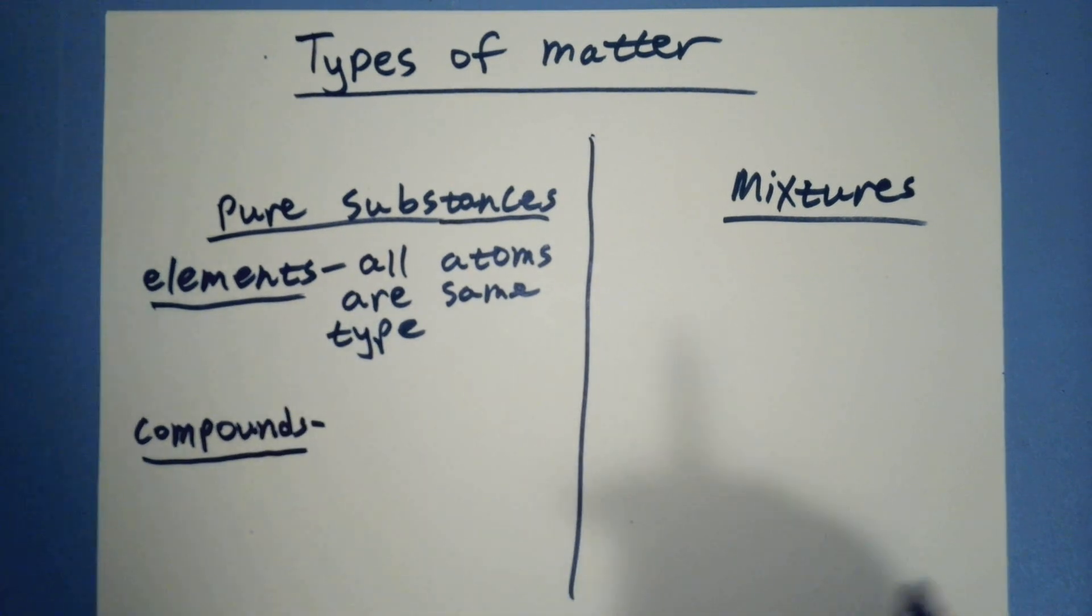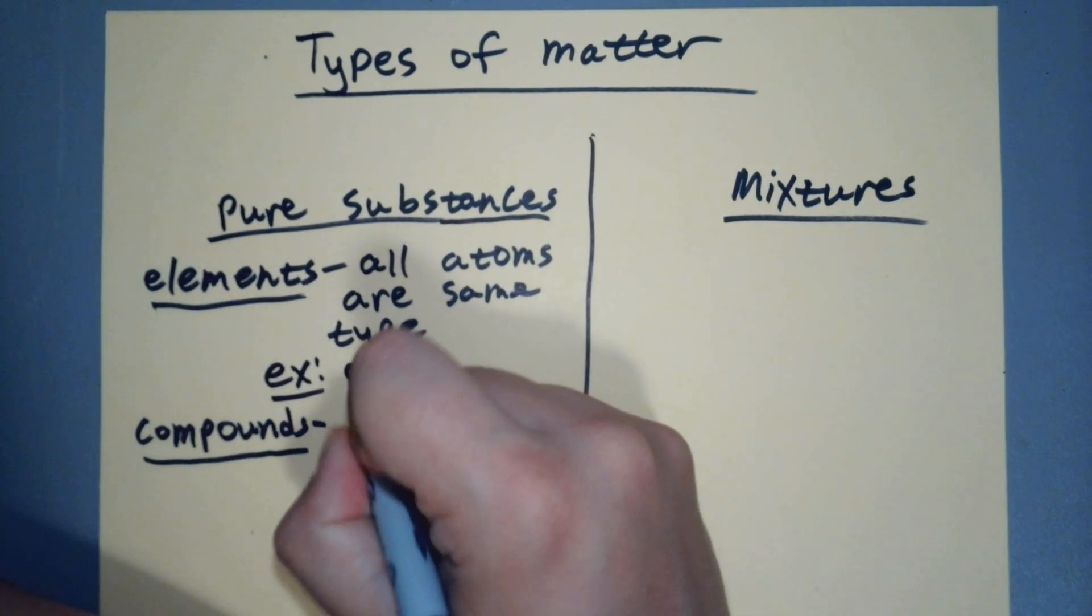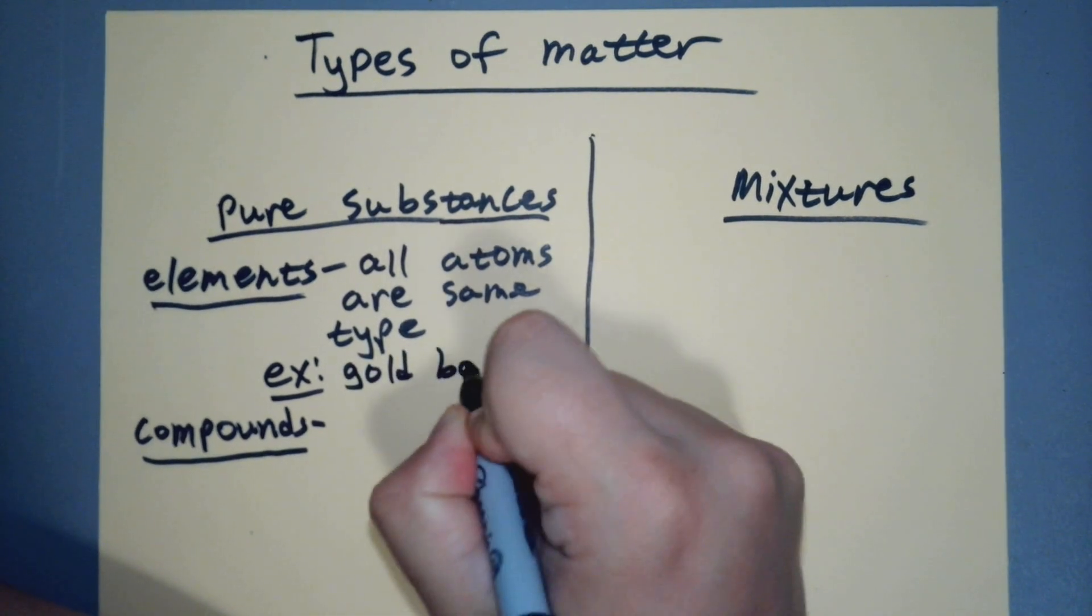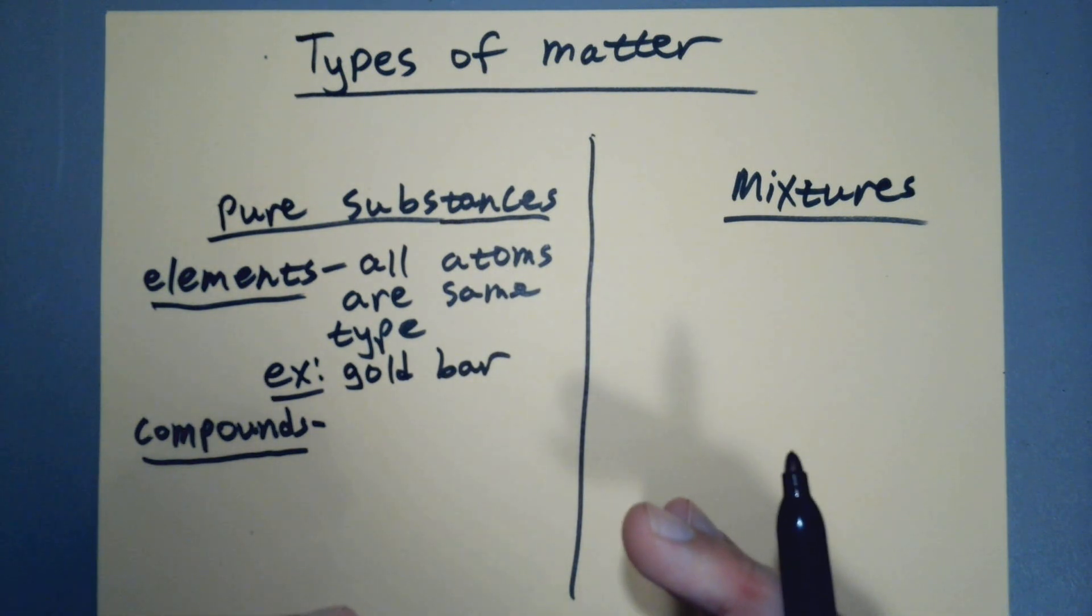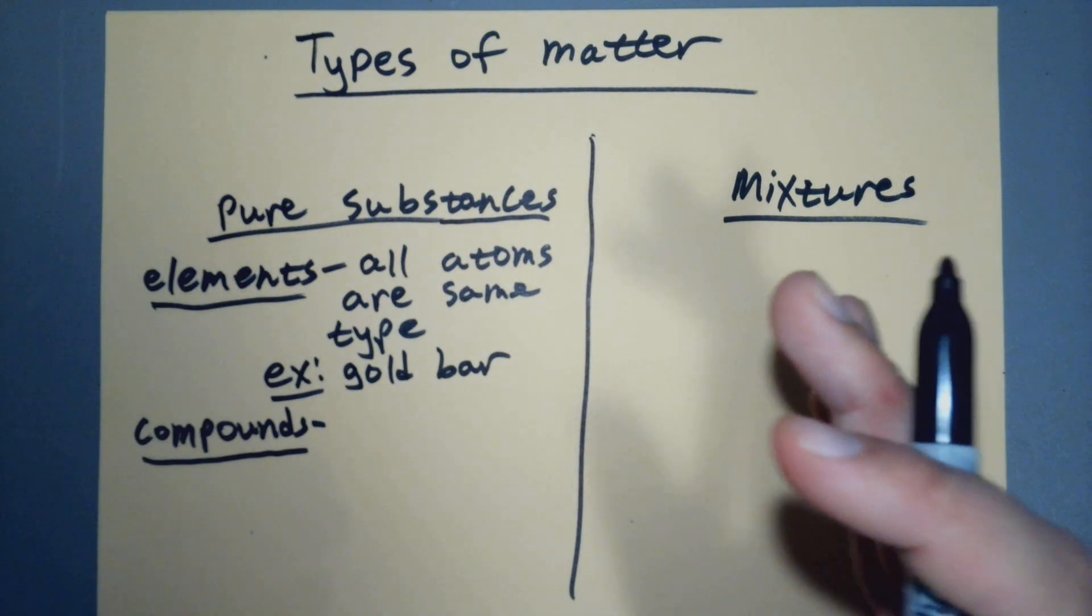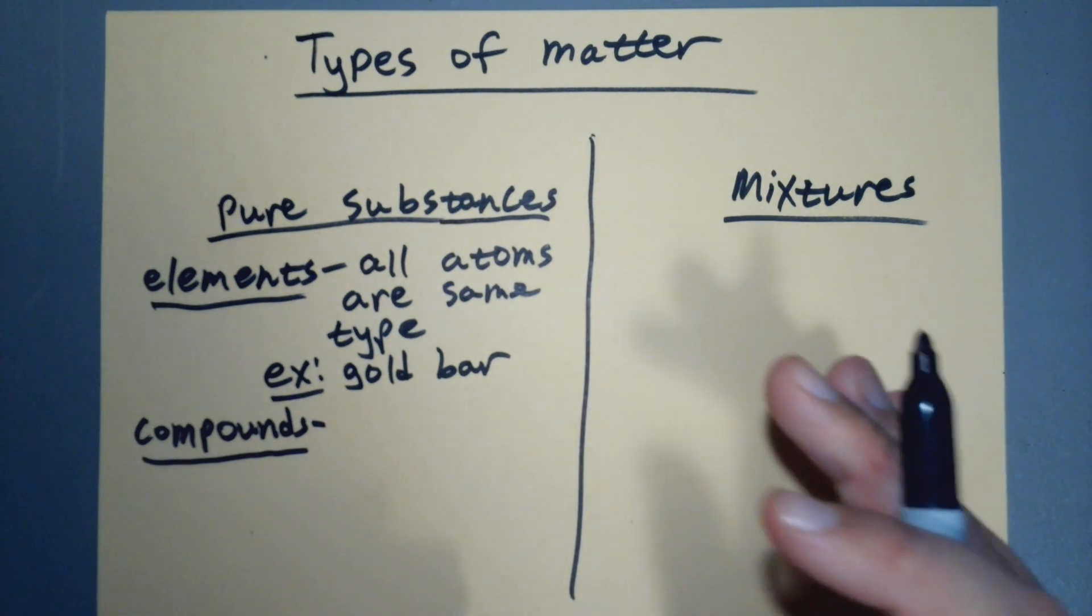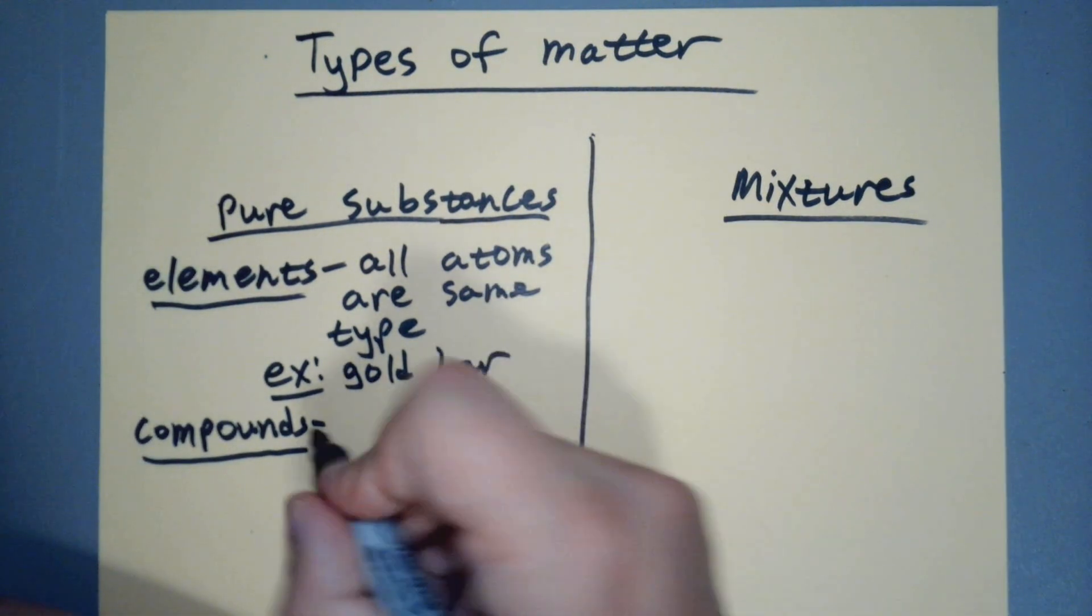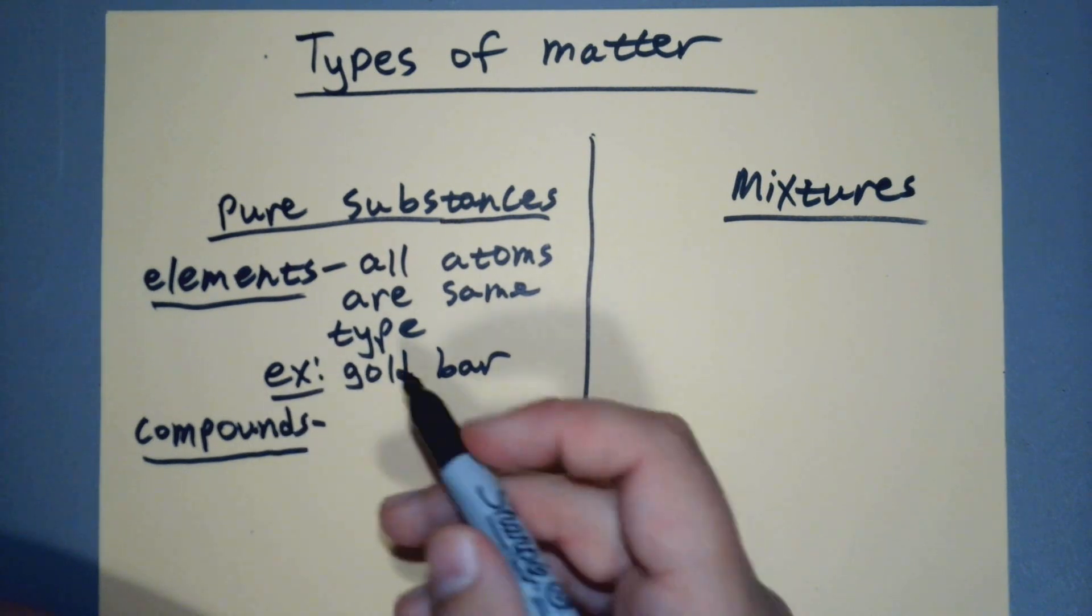An example of a pure substance element might be like a gold bar, so it's all gold atoms in a gold bar, or urine, whatever it might be. If you didn't watch the last video, that comment made no sense. Stupid alchemists, it's all their fault. Alright, so compounds are made of multiple types of atoms.